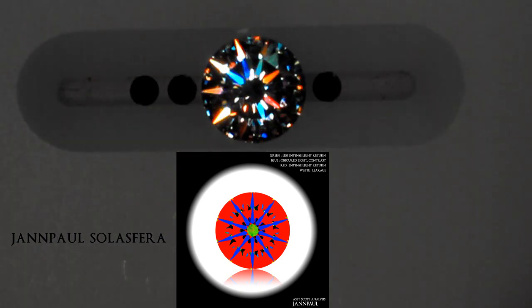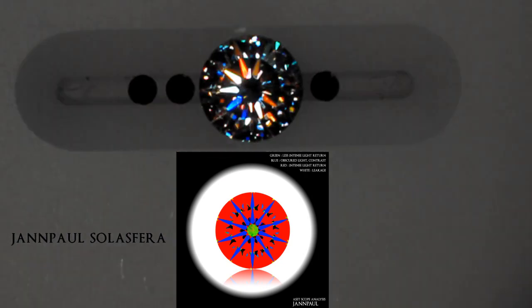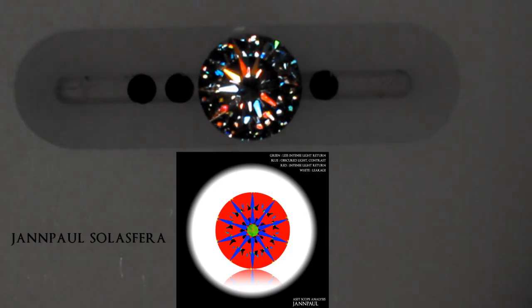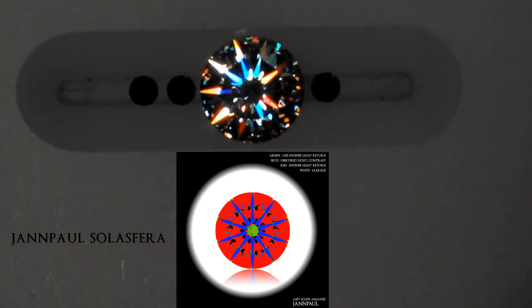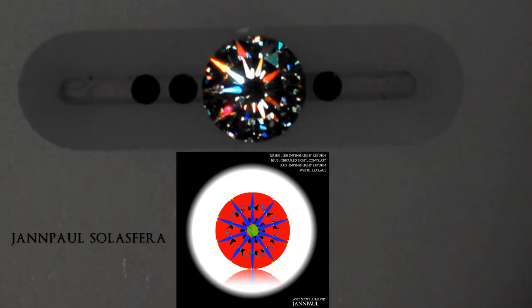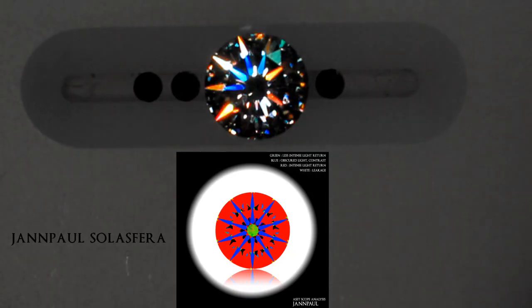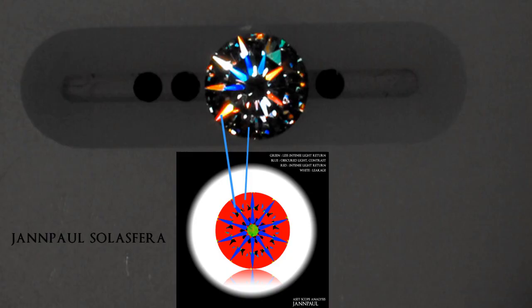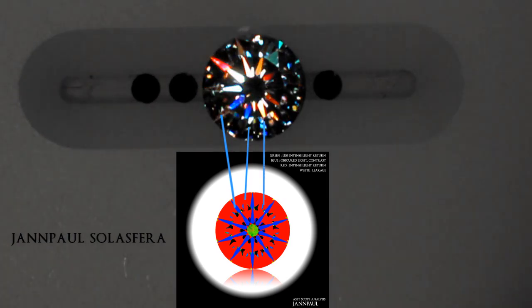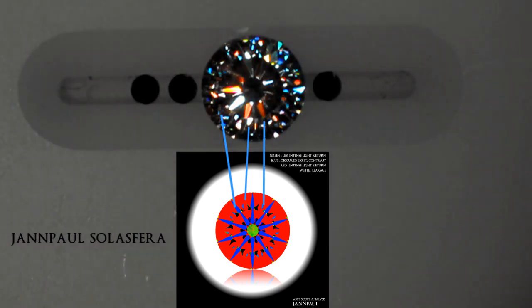Next is our beautiful Solar Sphere diamond with 10 hearts and 10 arrows with 91 facets. Due to the additional facets of the Solar Sphere, there is extreme light return giving higher amounts of dispersion as seen in the red parts from the ASAT scope. With more arrows as indicated in the blue parts of the diamond, the Solar Sphere has more light reflectors within. With hardly any light leakage, the Solar Sphere is one of the most scintillating diamonds in the market as illustrated in the green parts of the ASAT scope.